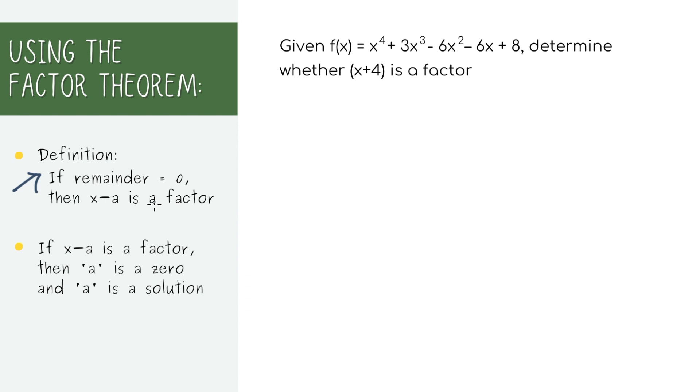This is pretty intuitive if you think about it. If you have two numbers that divide evenly, like 14 divided by 7, then the remainder will be zero and they're factors of each other. So the same thing applies to polynomials.